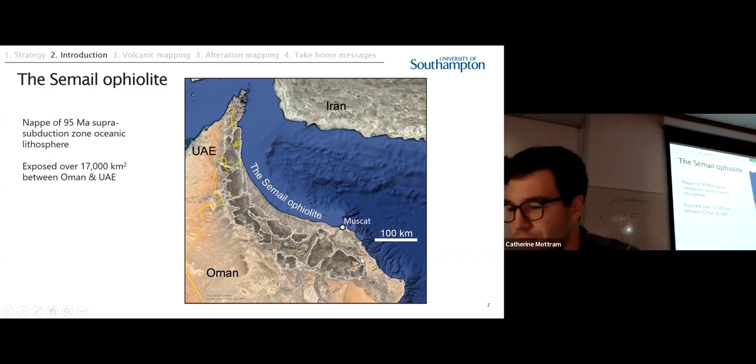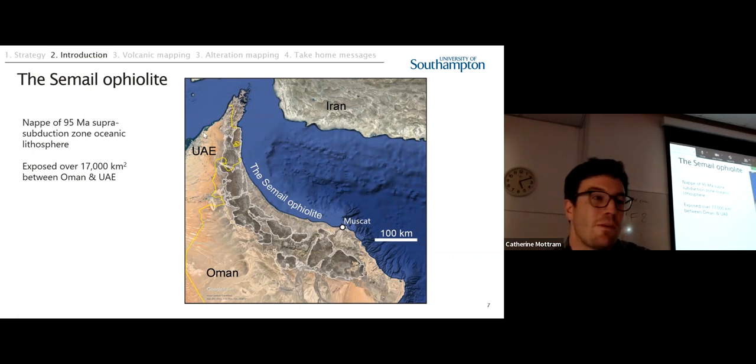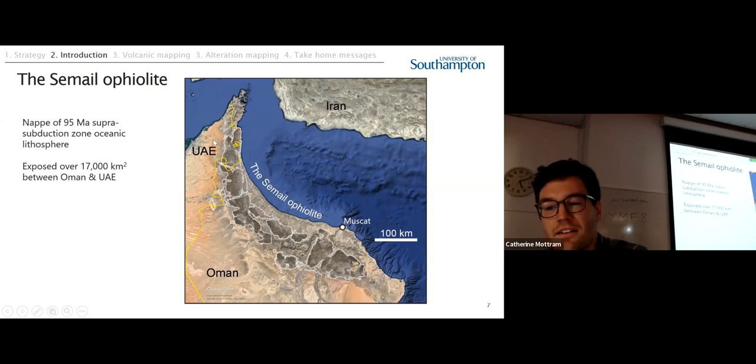So, let's jump right into the Samail Ophiolite. Here, outlined in white, along the northeastern tip of the Arabian Peninsula. That is the biggest exposed ophiolite on Earth at around 17,000 square kilometers of outcrop. Spectacular. Stretches from the UAE, or actually from Oman up here, this little Musandam Peninsula, through the UAE into northeast Oman, down to near Muscat.